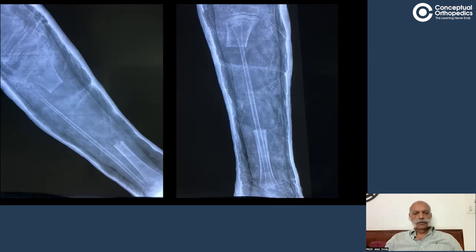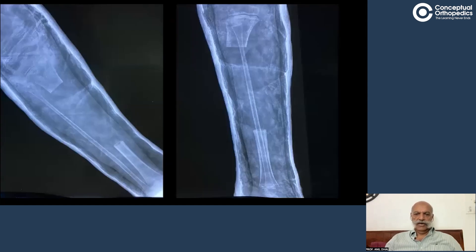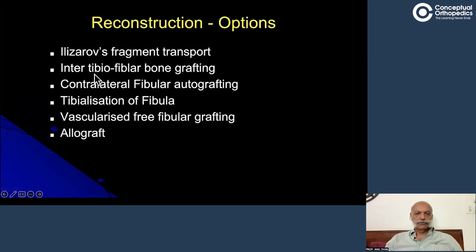The options we discussed last time in the interactive session are listed here. We could either do an Ilizarov fragment transport operation — a corticotomy in the proximal or distal metaphyseal region — or a bifocal fragment transport with both a distal and a proximal metaphyseal osteotomy, moving both segments simultaneously to achieve closure of the gap quickly. The second option was an inter-tibio-fibular bone grafting.